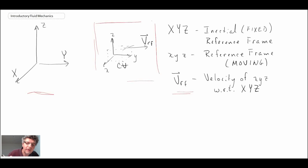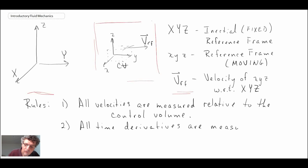Now there are a couple of rules we need to abide or work by when we're dealing with the case of a constant velocity control volume. So the rules we need to abide by.